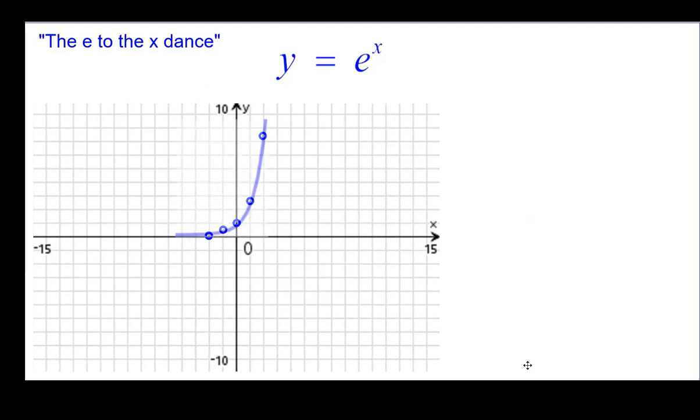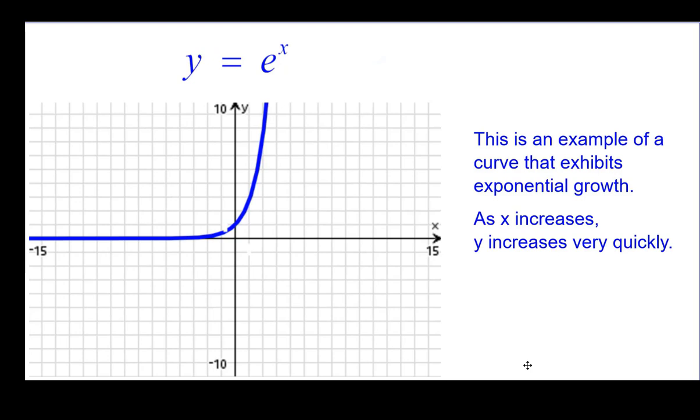When we connect the points, we get that kind of easy chair look. And then we go ahead and put in the end behavior that we know. This again is an example of a curve that exhibits exponential growth. As x increases, y increases very, very rapidly. This is exponential growth.